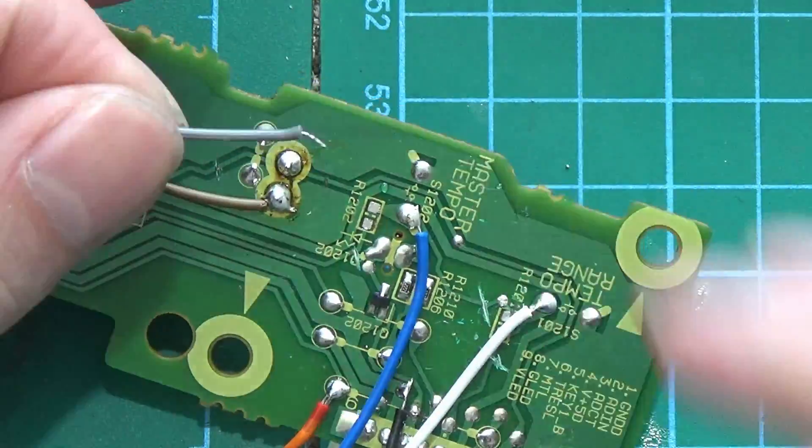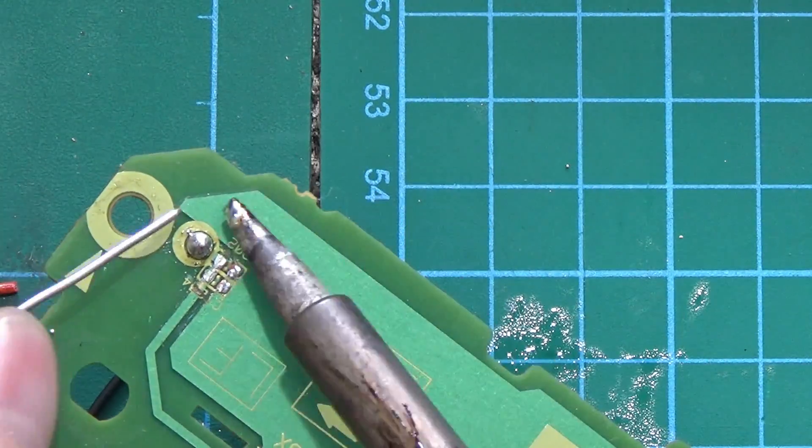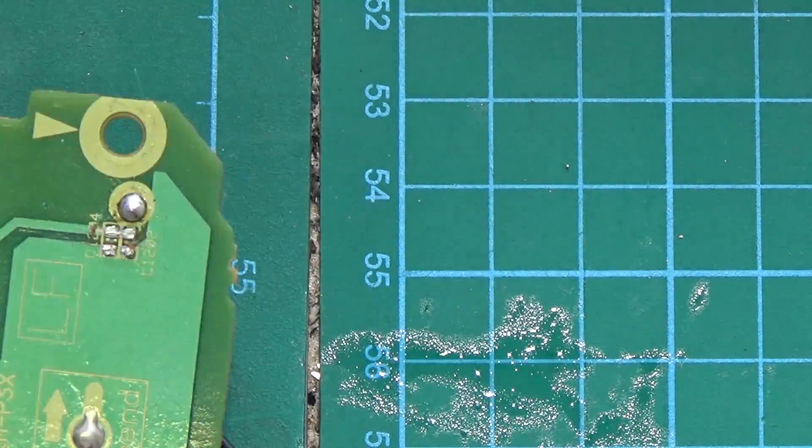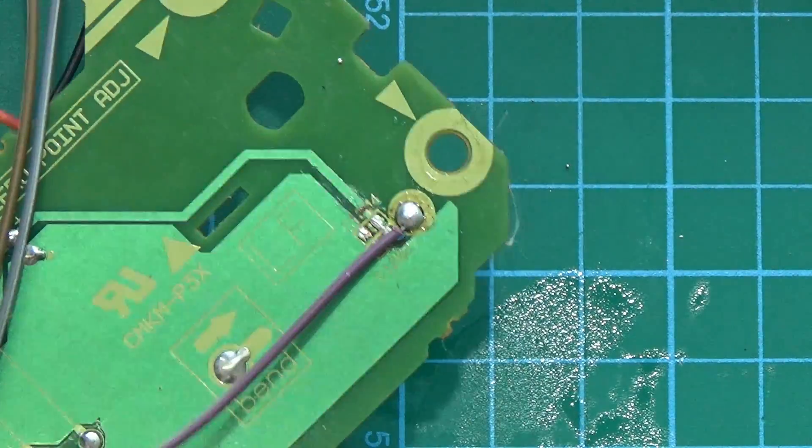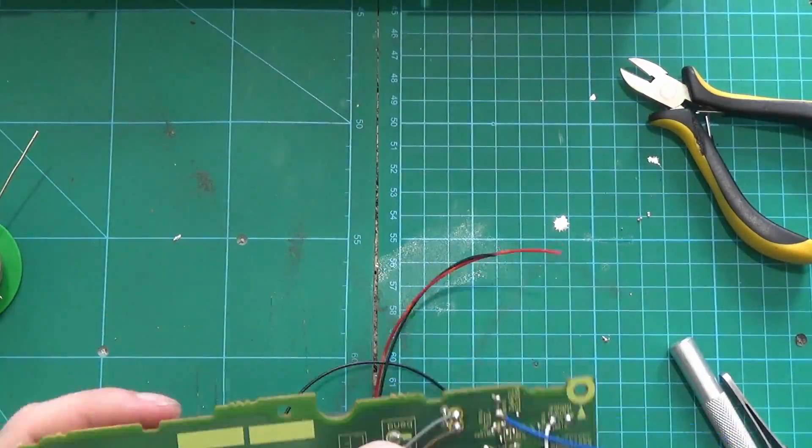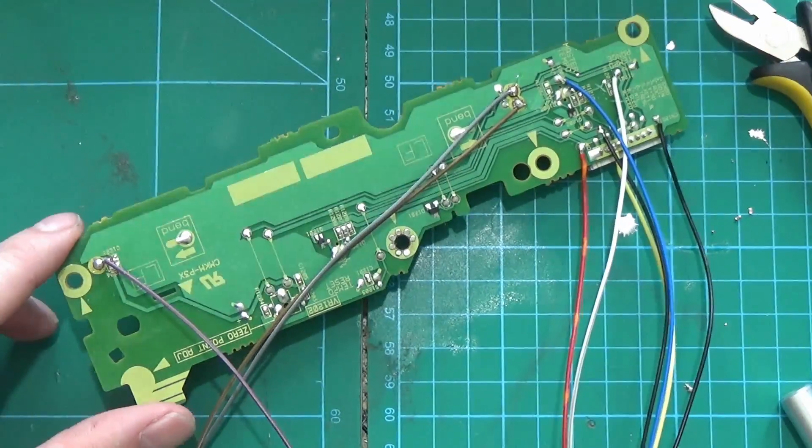And now we have the link that goes to the analog input of the Teensy to read the actual position of the pitch. So there we go, there are our wires so that we can connect this into the Teensy.